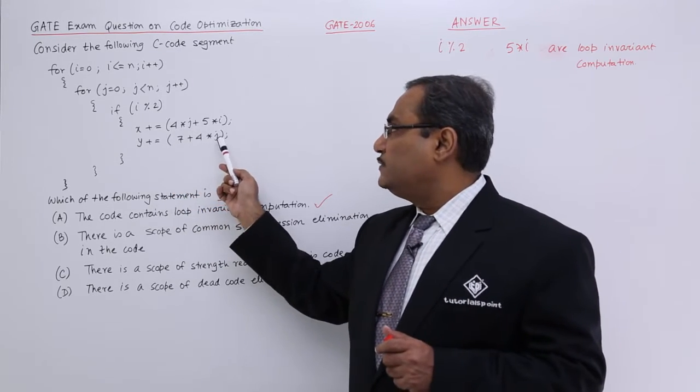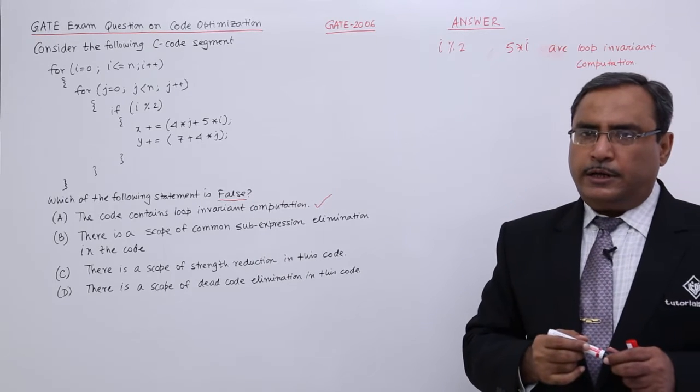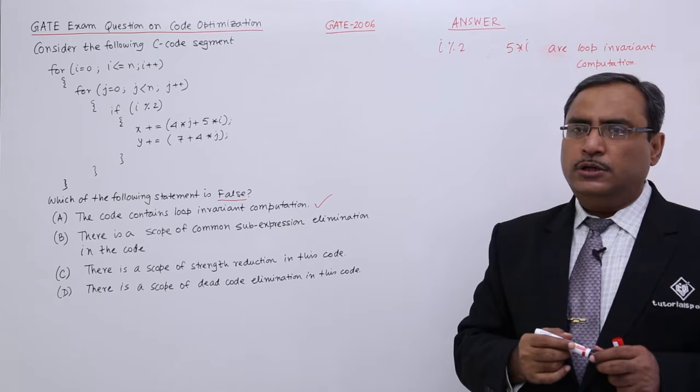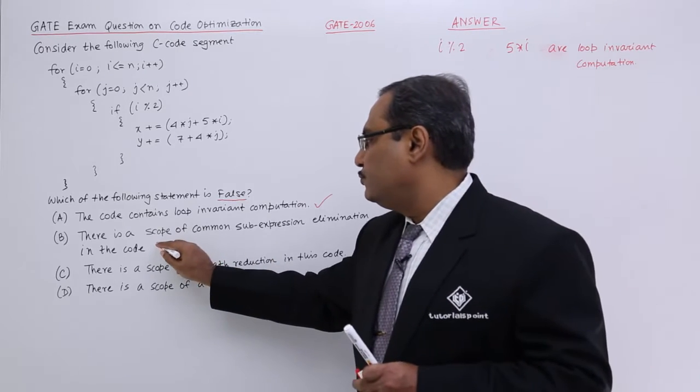One is 4 star j, another one is 4 star j. 4 star j can be eliminated as common sub expression. Finite scope is there. This particular statement is correct, is true.